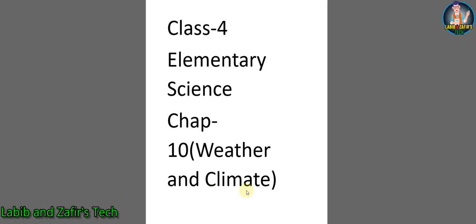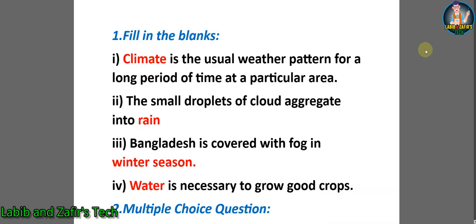Let's start with filling in the blanks. Number one: climate is the usual weather pattern for a long period of time at a particular area. Number two: the small droplets of cloud aggregate into rain. Number three: Bangladesh is covered with fog in winter season. Number four: water is necessary to grow good crops.